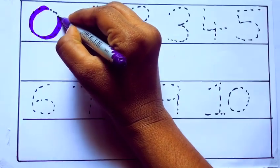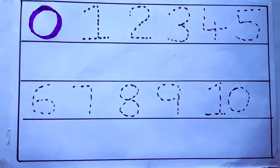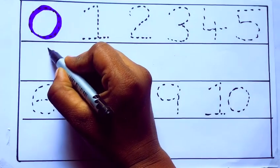Let's draw numbers. Violet color, 0, Z-E-R-O, 0.